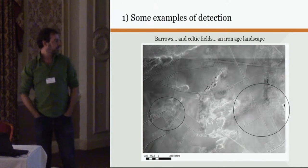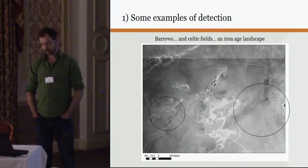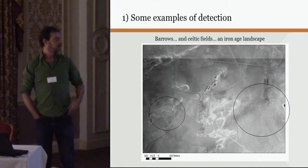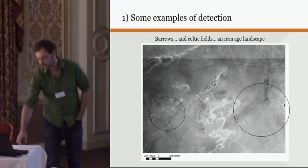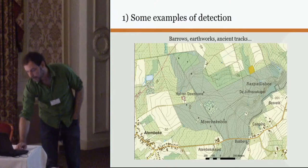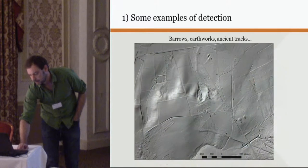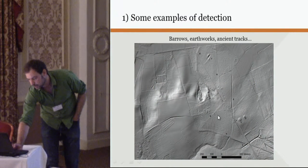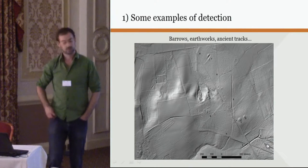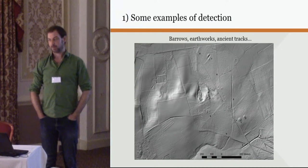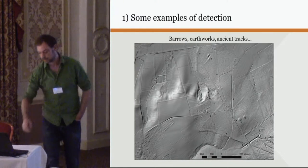In the neighbourhood of that barrow complex, the appearance of Celtic fields — a complete Iron Age landscape, as it were, preserved under parts of the forest. Another example of a forested landscape, this time in East Flanders, where we can see a number of barrows, a number of earthworks, an earthen bank, ancient tracks — so a lot of features popping up in those historical forests as well.